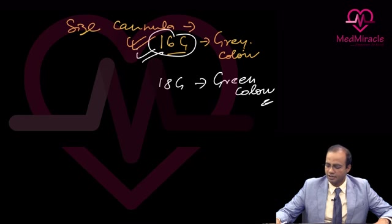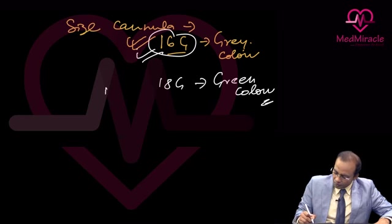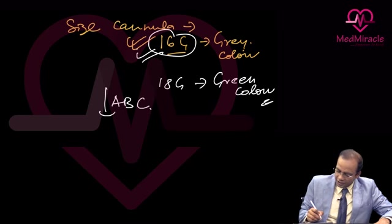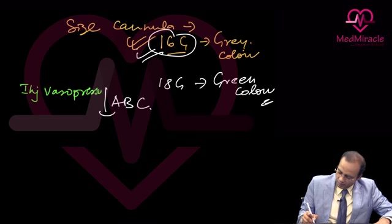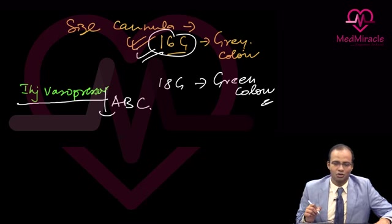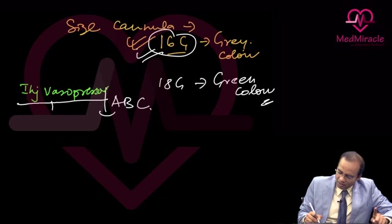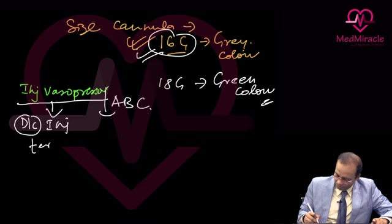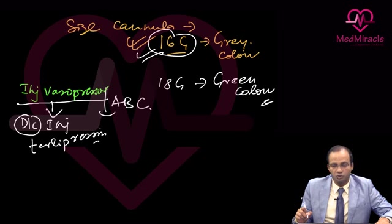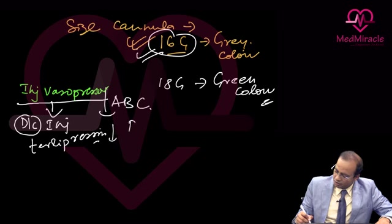After ABC, immediately start injection vasopressor drugs. Options include injection octreotide, somatostatin, and terlipressin. The vasopressor drug of choice is injection terlipressin. After terlipressin, we put a nasogastric tube.